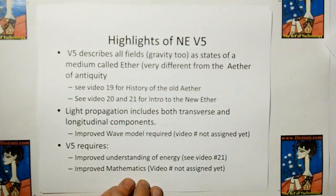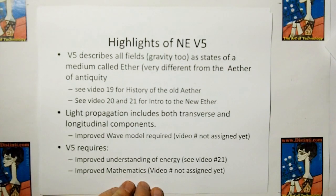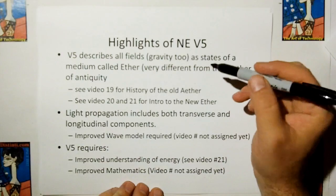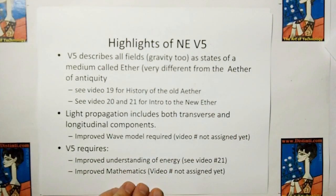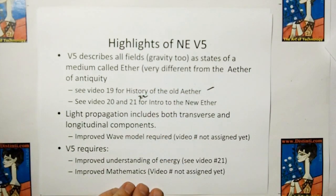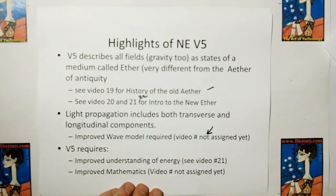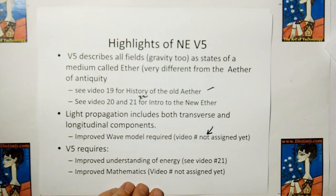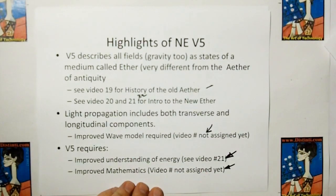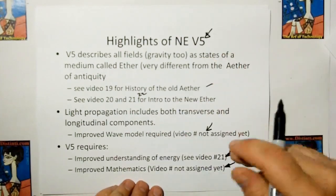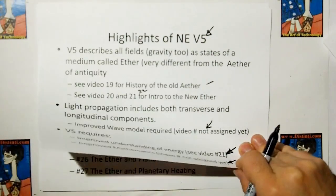And there's still something missing. So the V5 models, which include gravity too, describe all the states. All the field effects are states of a medium that we're going to call the ether. It's different from the ether of antiquity. The light propagation has to include both transverse and longitudinal components. We have to produce an improved wave model that replaces the Helmholtz. Because you cannot have transverse propagation without longitudinal propagation. We also need an improved understanding of energy. There's a lot more energy in the universe than we take credit for. And it's right under our nose. And we also have to improve mathematics. There's a gaping hole in mathematics before we can get to V5. And we have to produce a paper on that prior to releasing V5.